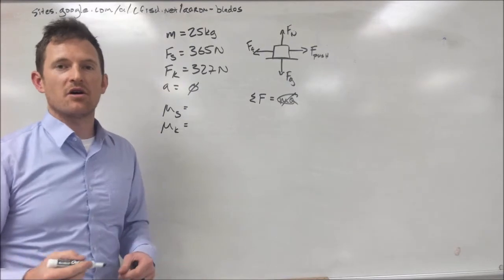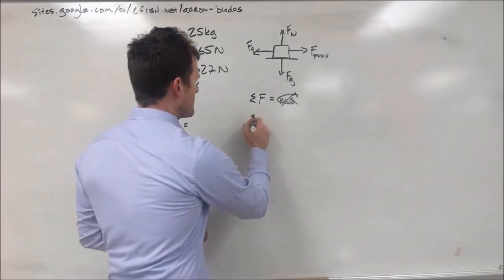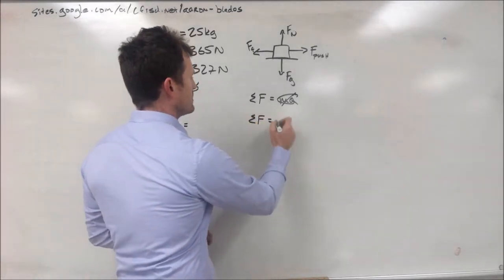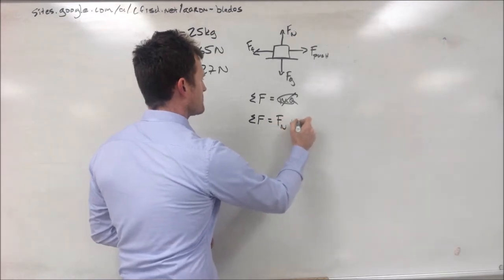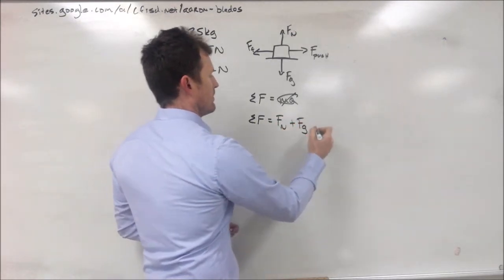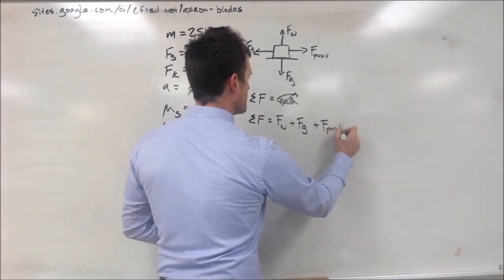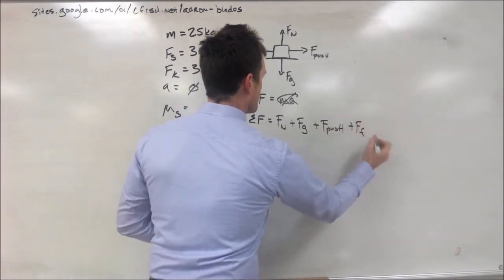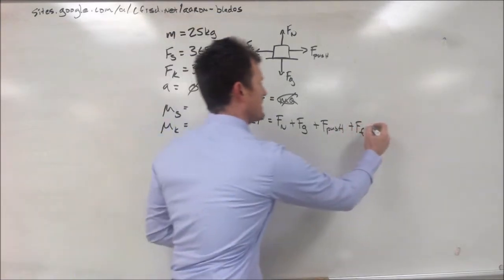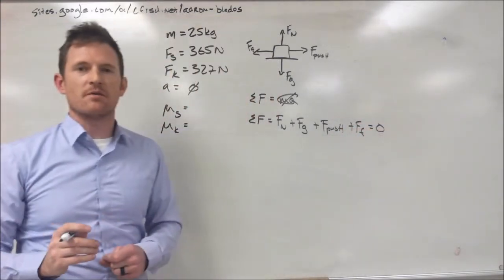So, now let's add up all of our forces. Our sum of forces is equal to our normal force plus our gravity force, plus our force of the push, plus our friction force. And all of that is equal to zero.